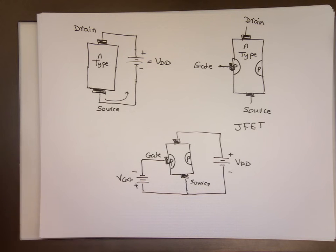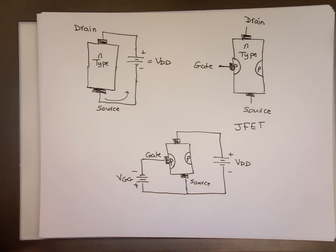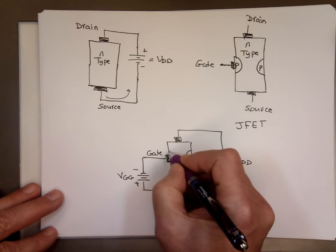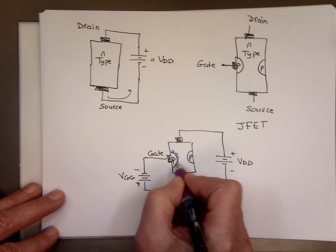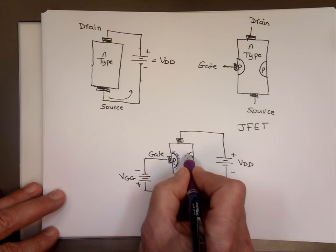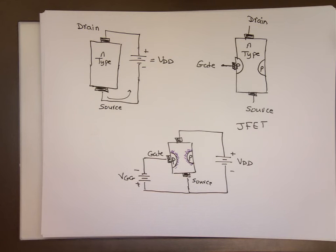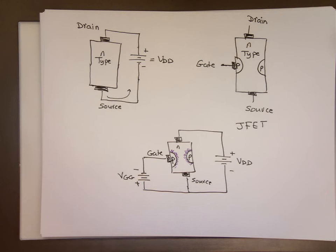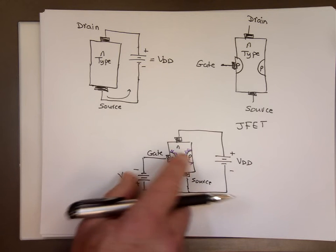In case you're wondering why they call this the field effect transistor — the term 'field effect' is related to the depletion layer around each P region. These depletion layers exist because free electrons diffuse from the N region to the P region, and the recombination of free electrons and holes creates a depletion layer right there at each P-N junction.